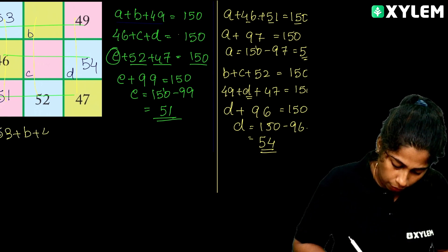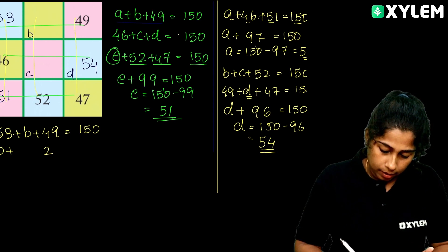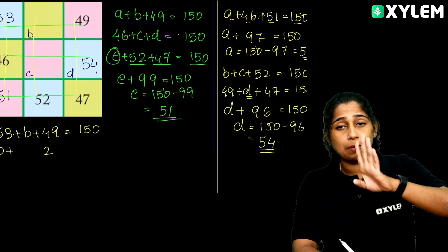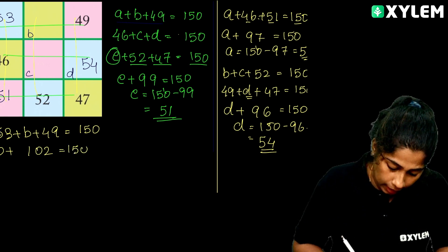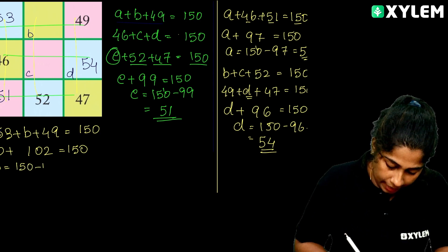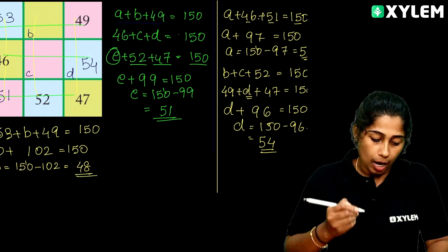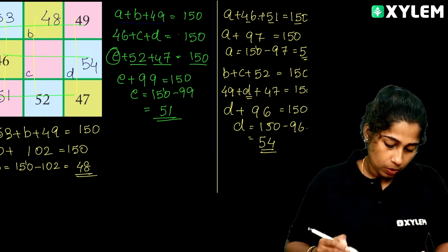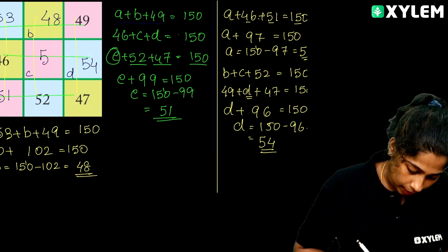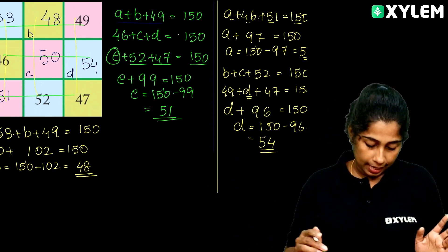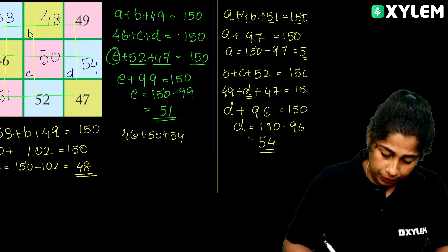Now, 53 plus B plus 49 equals 150. So B plus 102 equals 150, and B equals 150 minus 102, which is 48. We have to put 48 in the square. Then 48, 46, and 49 — so we have to put 50 in the middle. And we check: 46 plus 50 plus 54 is equal to 150. Correct!